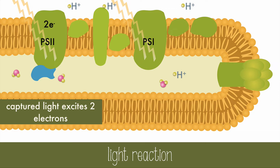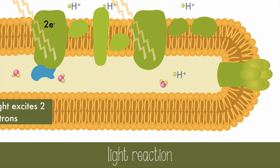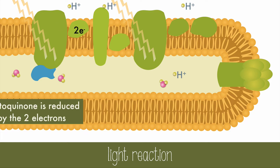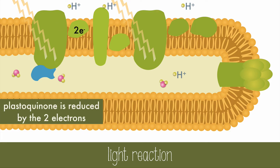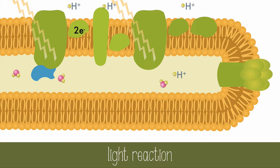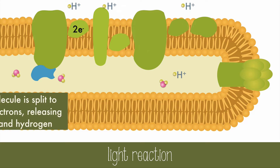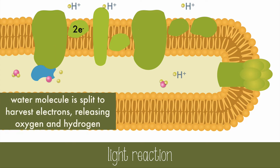Two photons of light have excited two chlorophyll electrons in Photosystem II, but they need to be captured in order to do work. Plastoquinone will accept the two electrons, becoming reduced in the process. The chlorophyll in the reaction center of PS2 is a strong oxidizing agent and will split a water molecule to replace the missing electrons, leaving two protons and an oxygen ion in its wake. This process is called photolysis.